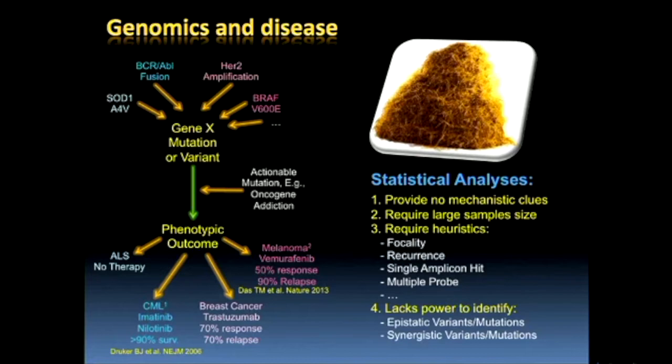That discovery was instrumental in developing a drug called Gleevec or imatinib, which has a spectacular response in patients with CML. Literally, patients who were going to die the following week were taken off their death sentence by this drug. That success has had the potentially unwanted consequence of spurring the entire field of precision medicine toward the direction of oncogene addiction.